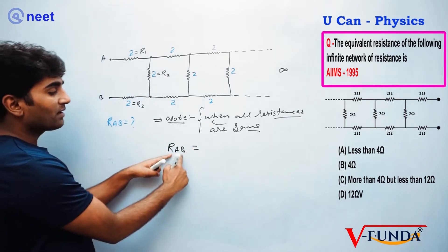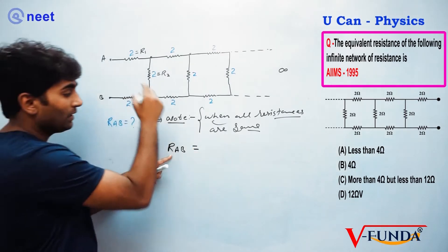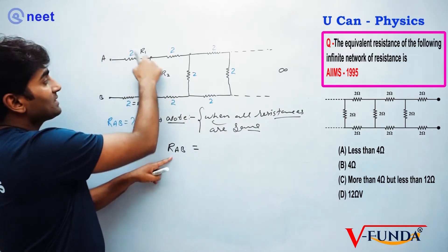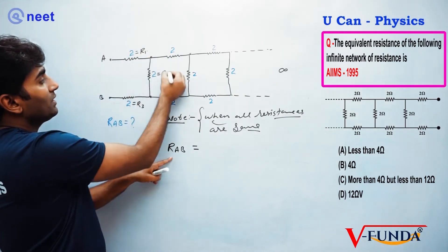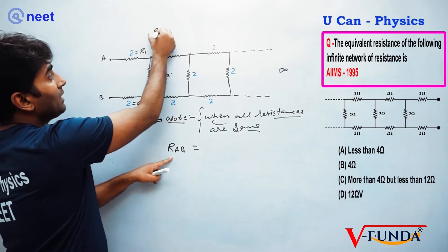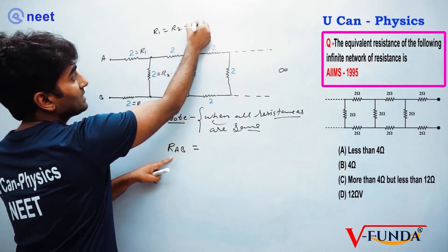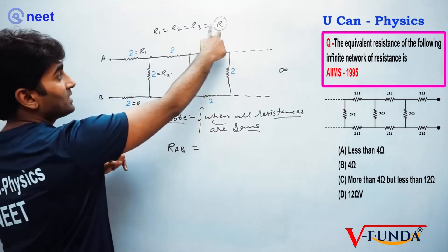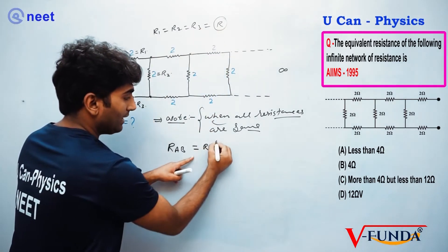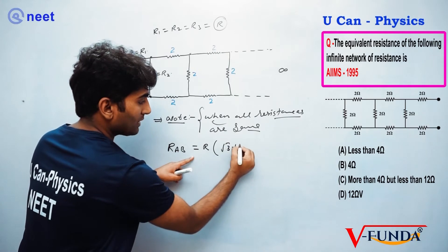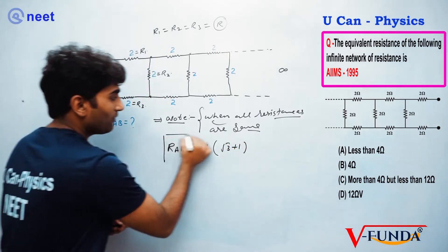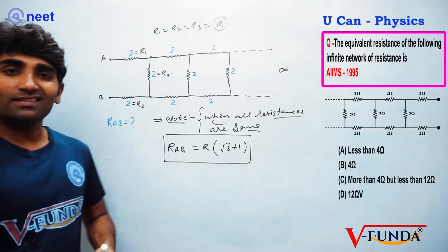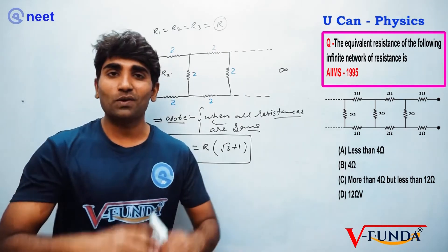Calculate the equivalent resistance between terminals A and B. Write down directly which resistances are given: R1, R2, R3. Since R1, R2, and R3 are the same value R, you set up the self-similar equation. The equivalent resistance works out to R times (√3 + 1). That will give you the final correct answer.